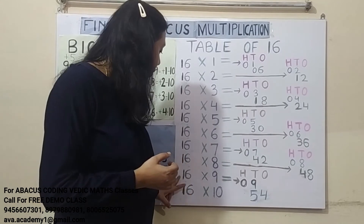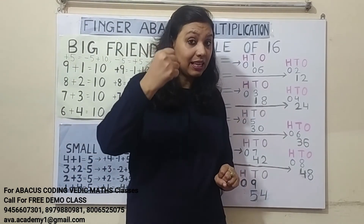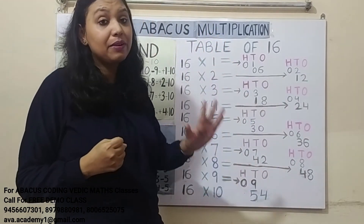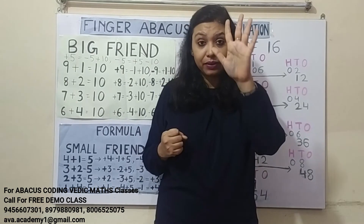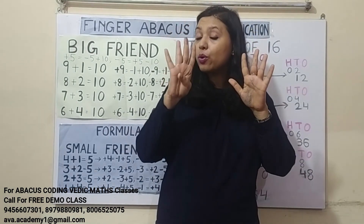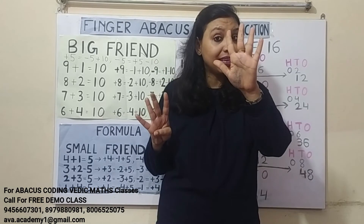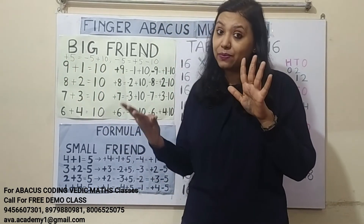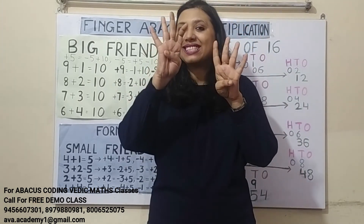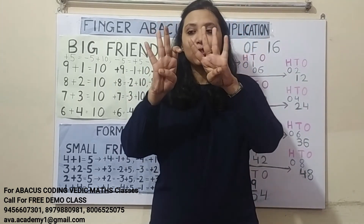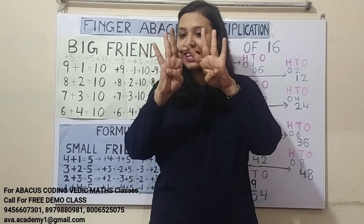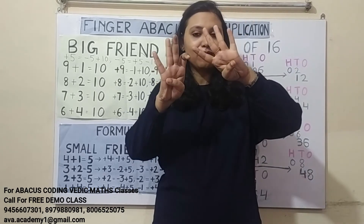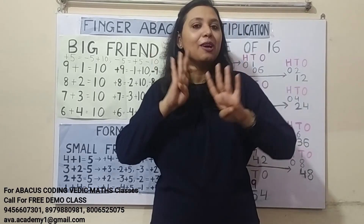16 nines are: 1 nines are 9 — in 100's it's 0, and in 10's it's 9. 6 nines are 54 — in 10's we have to add 50, and in 1's we have to add 4. We can add 4, but to add 50: plus 5's formula is minus 5 plus 10, so plus 50's formula is minus 50 plus 100. So the answer is 144: in 100's it's 1, in 10's it's 4, and in 1's it's 4.